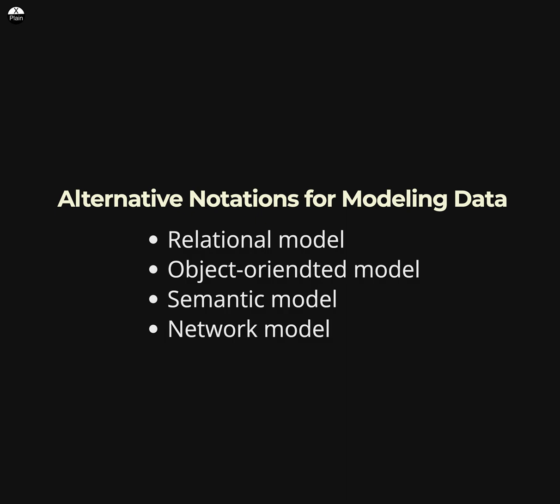Semantic model. The semantic model represents data as a collection of entities and relationships, similar to the ER model. The main difference is that the semantic model includes additional information about the meaning and context of the data, which can be used to improve the accuracy and quality of the data.